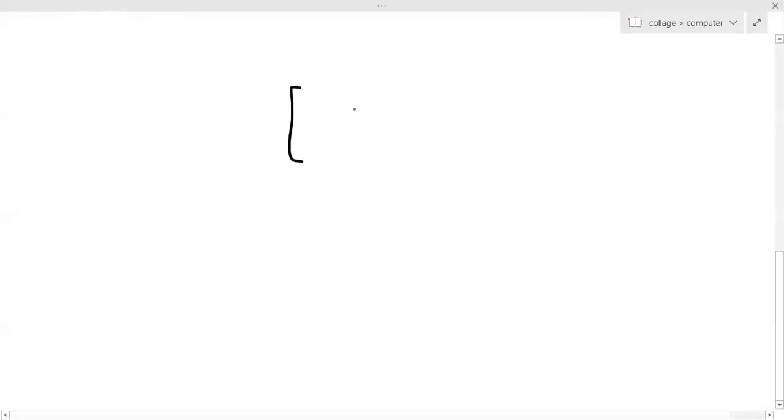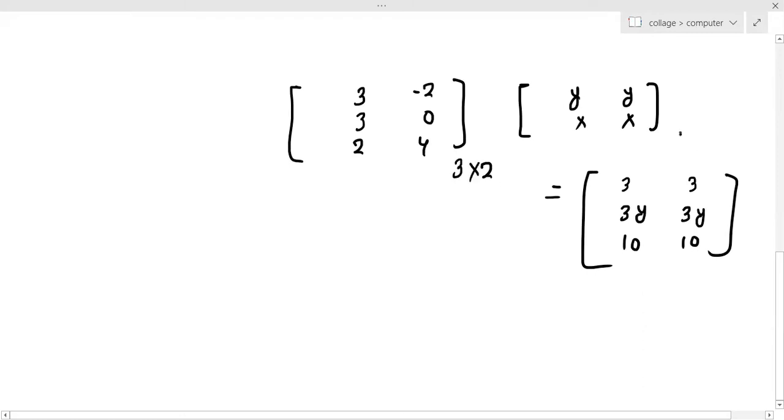Here, you have one matrix with the problem: 3, minus 2, 0, 4. Then you take y, x, y, x. This will give you 2, 3, 3y, and 10. So now, you will see that this is 3 cross 2 and 2 cross 2.